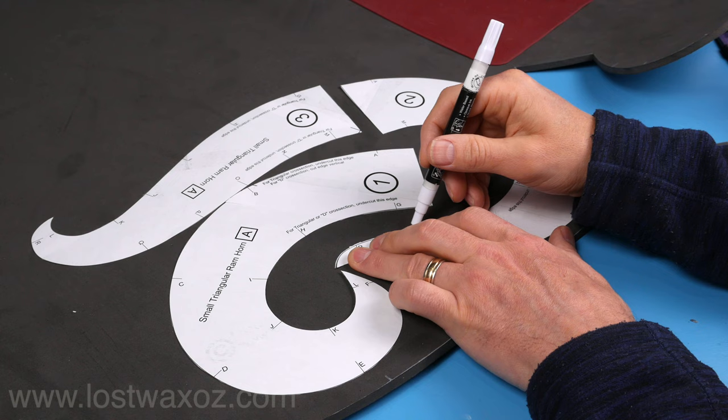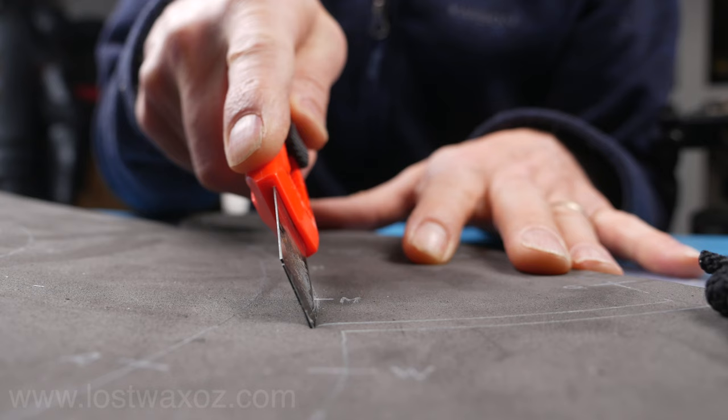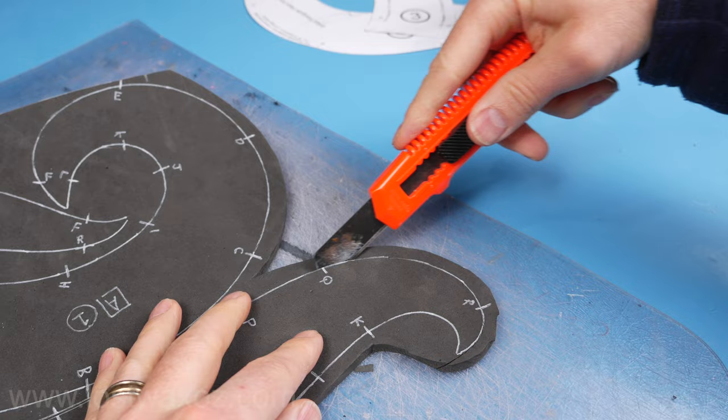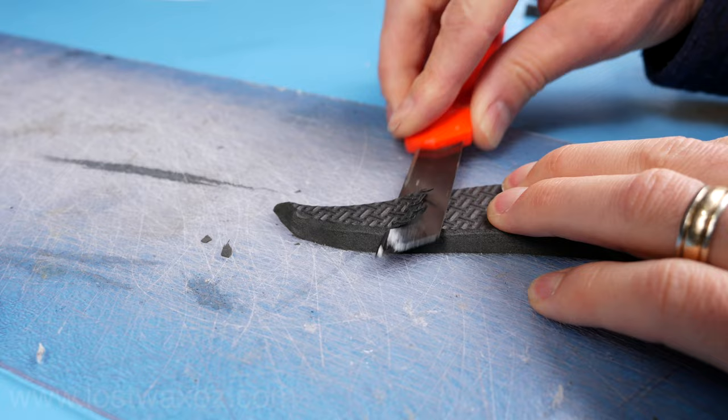Okay, now let's make the small triangular ram horn, and just for something different I'm going to show you gluing it together with contact cement. Everything's the same as far as tracing goes, but what's different is you're going to tilt your knife to about a 45 degree angle for cutting out all the long edges. That's all the edges except that short flat bottom edge. That one gets cut vertically, and of course don't forget to do some tip tapering. I always seem to forget that step and have to try and do it after I've started gluing.